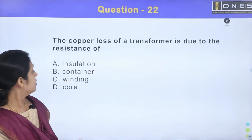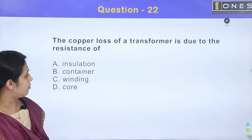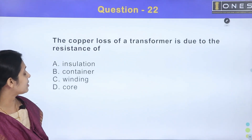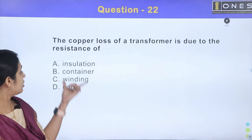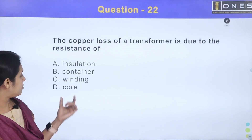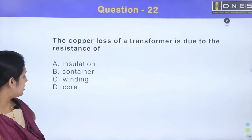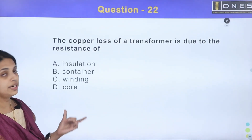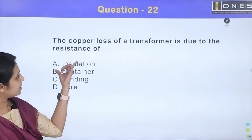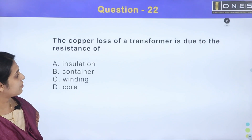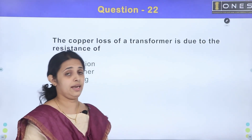Next question. The copper losses of a transformer are due to the resistance of: Option A: insulator, Option B: container, Option C: winding, Option D: core. The copper loss is the energy loss due to resistance.